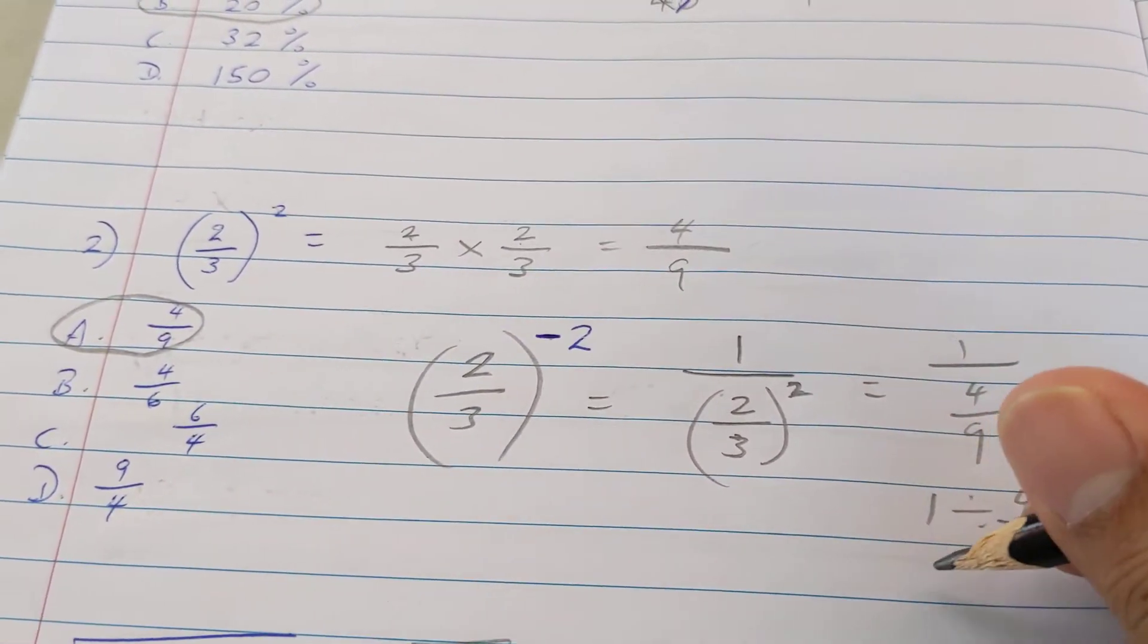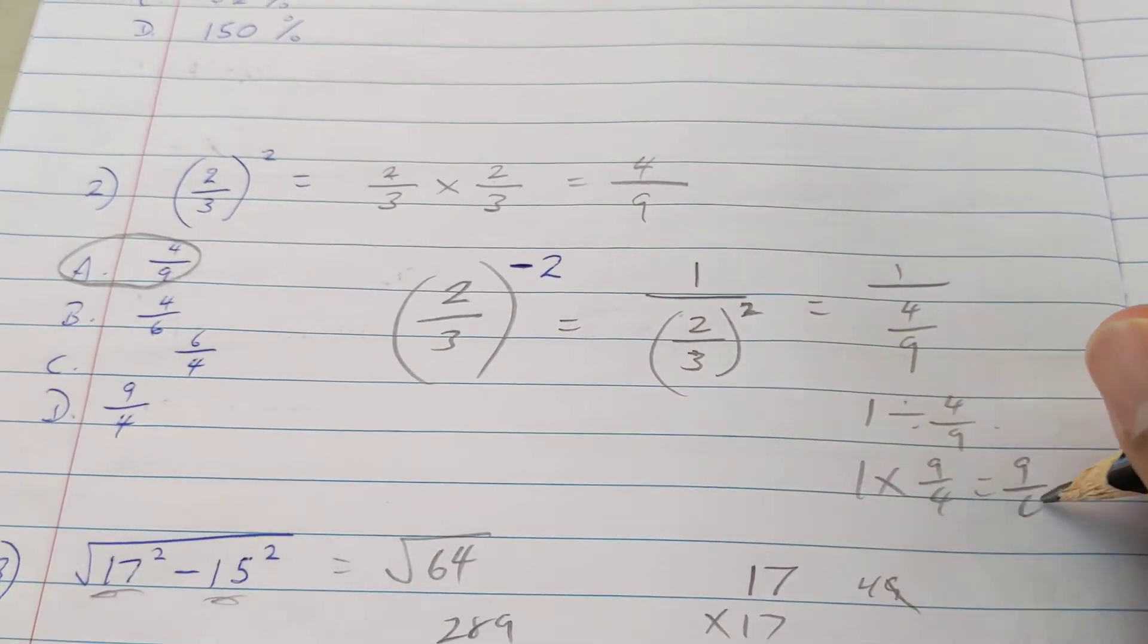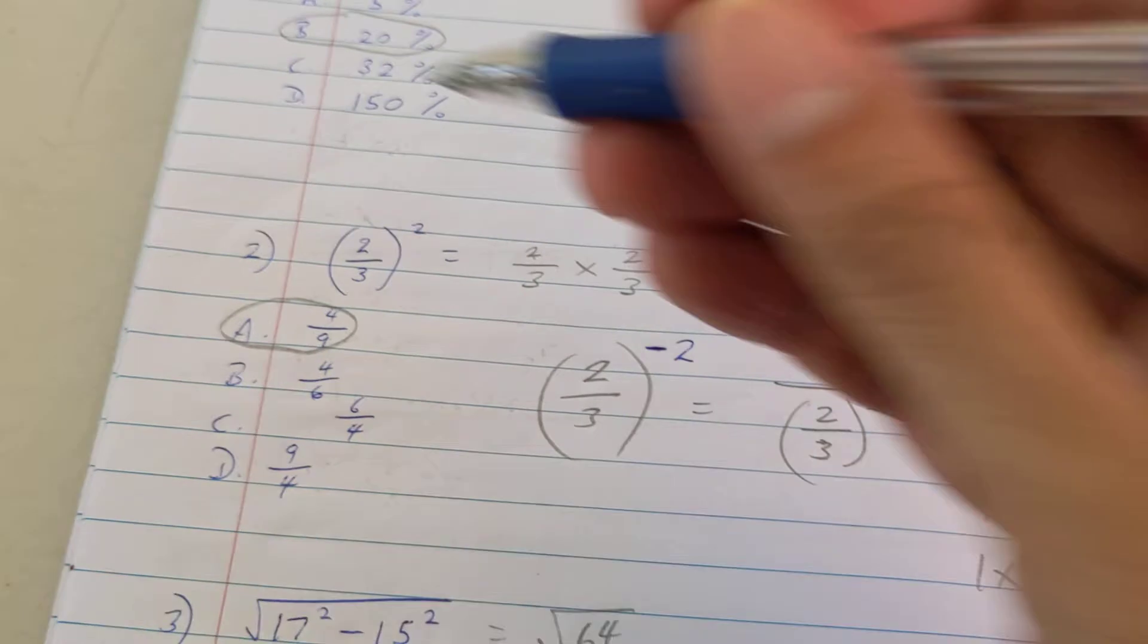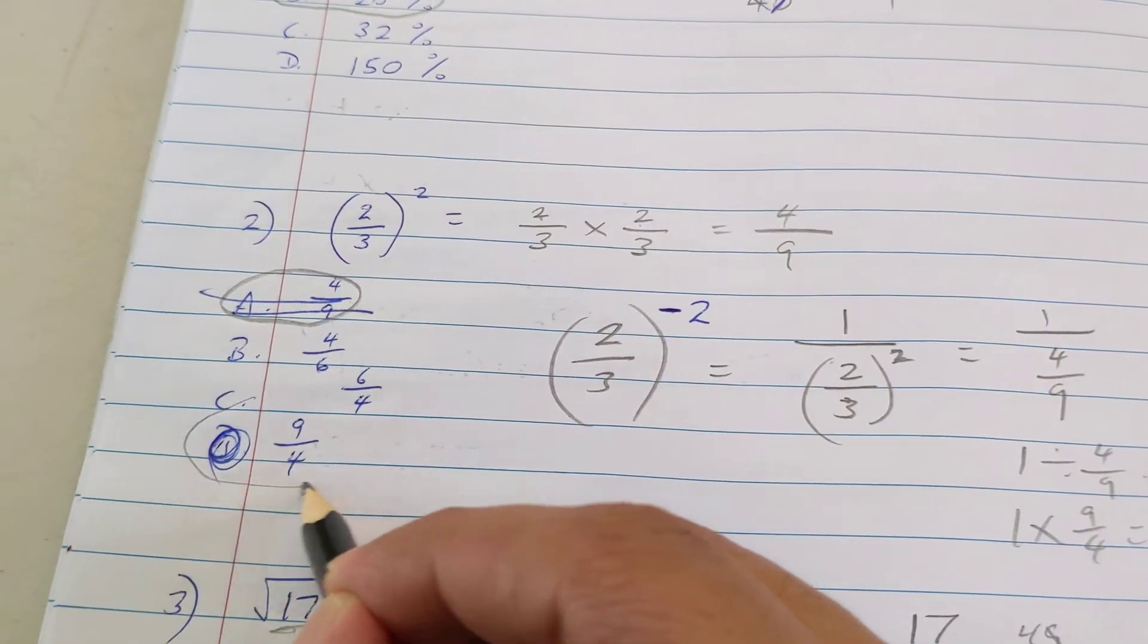We don't divide fractions, we flip and multiply. So it's really going to be nine over four. So this is the corrected answer for this one, just in case this question comes again.